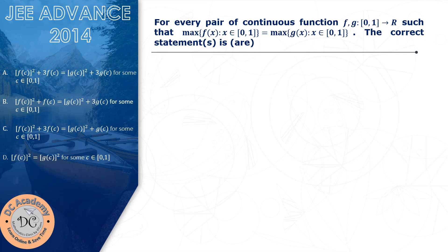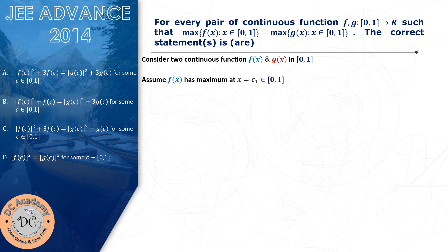We consider two functions f(x) and g(x). The meaning of continuous is that inside the interval it is a smooth function — it doesn't have a jump and doesn't go to infinity. We assume that f(x) has a maximum at x = c1, where c1 lies in the closed interval [0, 1]. We also consider g(x) which has a maximum at x = c2. Both functions have their maximum values equal, but that doesn't imply the maximum occurs at the same x. So we consider two different points c1 and c2.